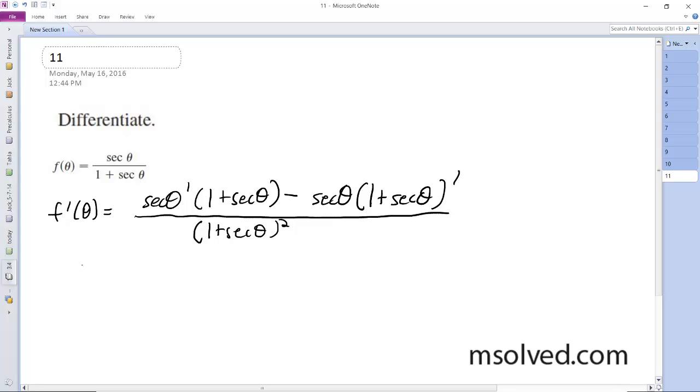The derivative of secant theta is equal to secant theta tangent theta. And then what we get here with the derivative, we have secant theta, and then it just becomes secant theta tangent theta.